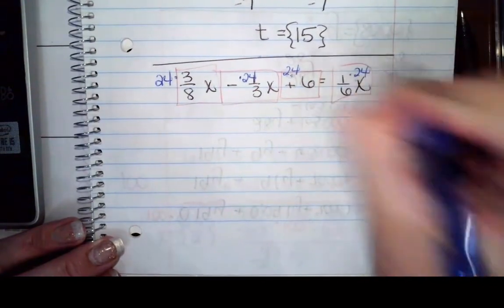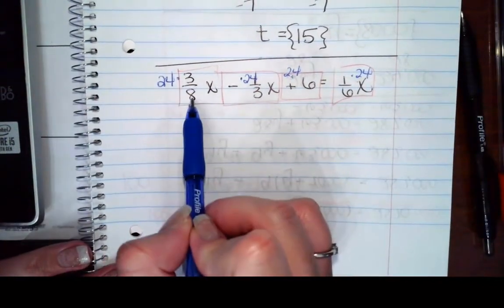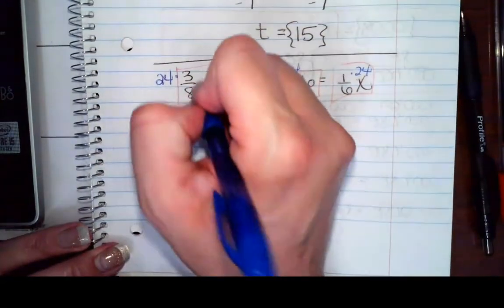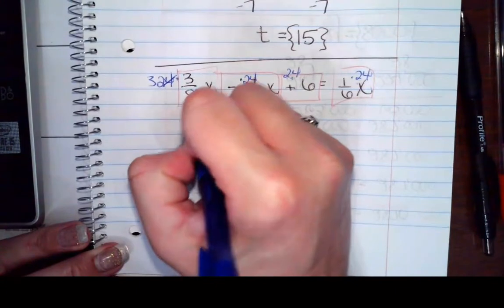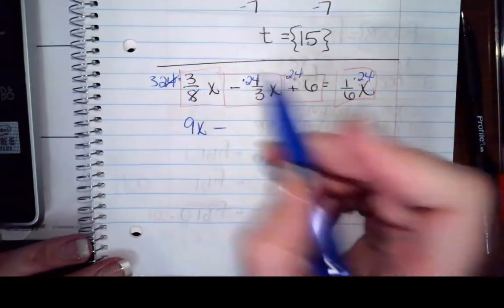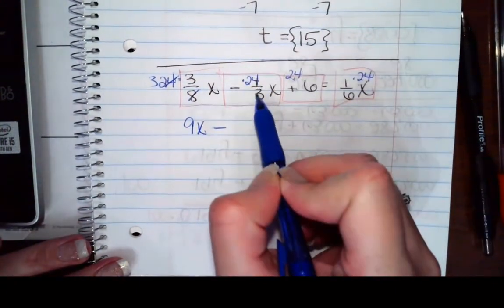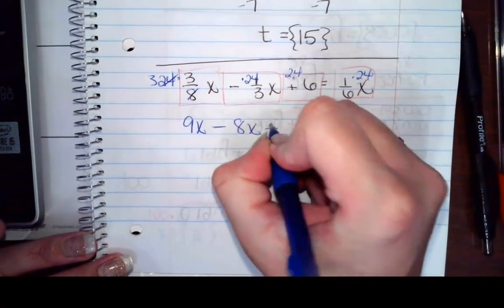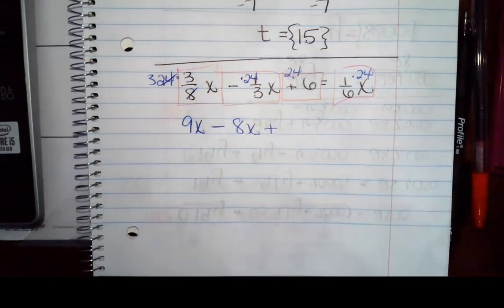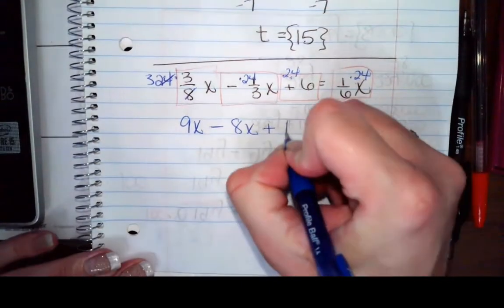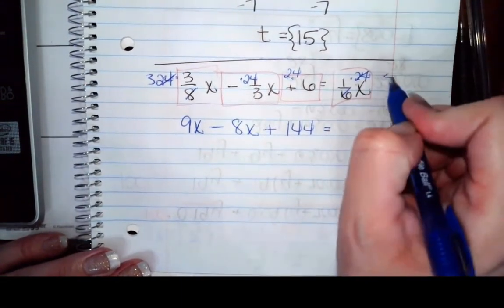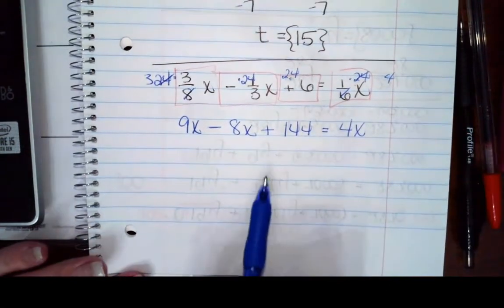24 divided by 8 is 3 times 3x is 9x minus 24 divided by 3 is 8. So I have 8x plus 24 times 6 is a large number. It should be 144. It is. 144 equals, and 24 reduces to 4. So that gives me 4x.